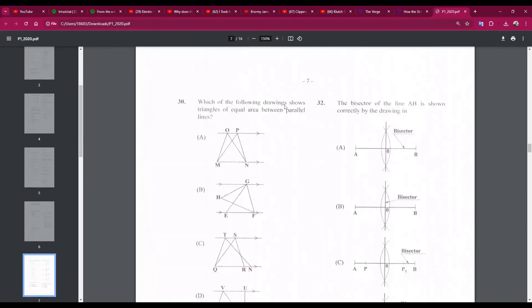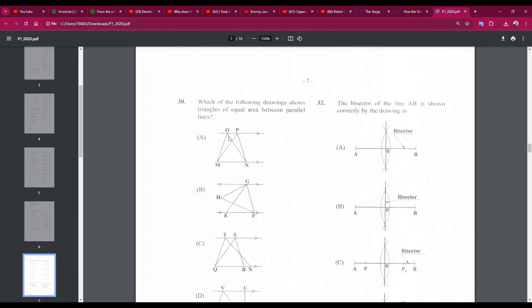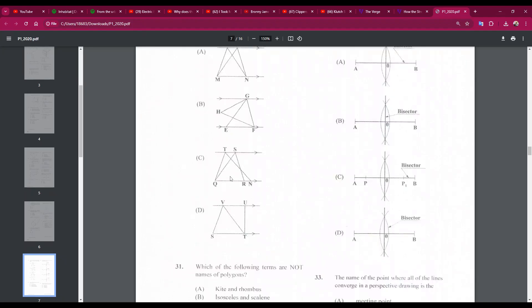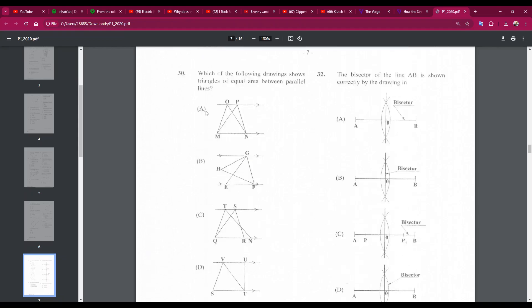Number 30: which of the following drawings shows triangles of equal area between parallel lines? The answer is A. This is a very common question. We would have gone through it before, but basically, these two triangles share the same base, and they have the same height. So as a result, they have the same area. None of the other triangles share these qualities. For C, they share the same height, but not the same base. And for D, same thing. Same height, not the same base. So the answer is A.